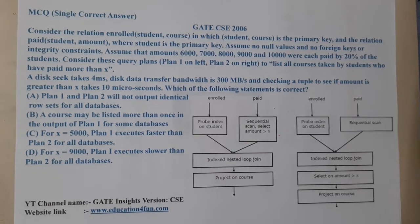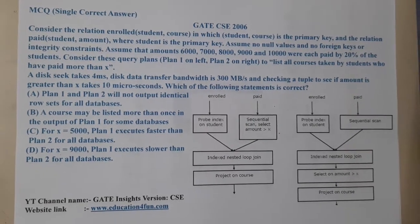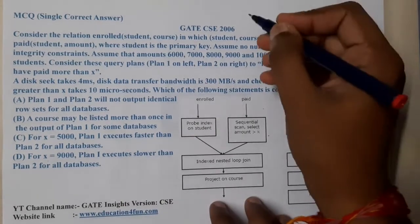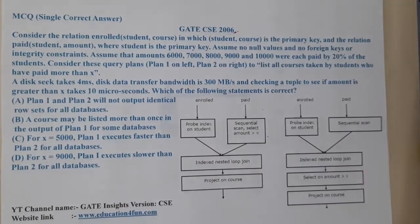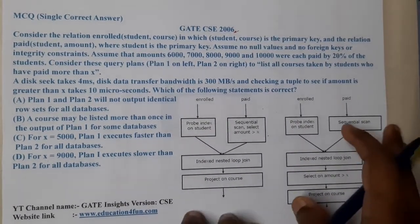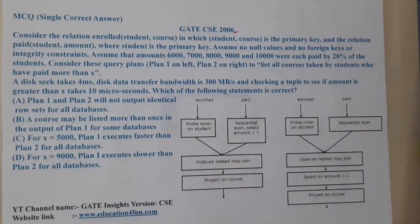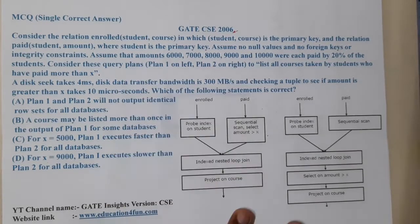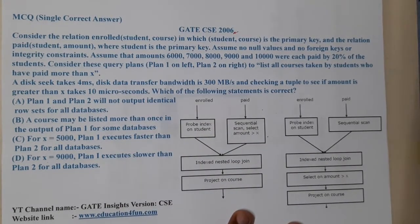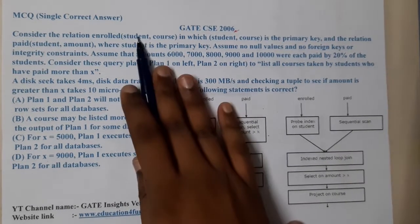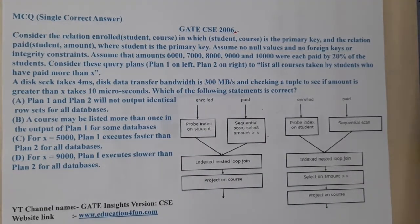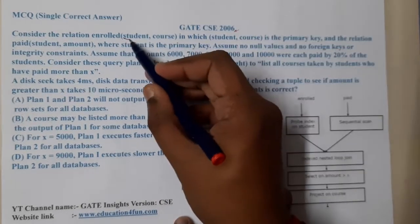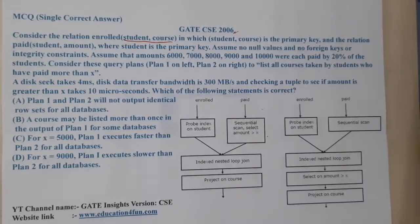Hello guys, we are back with our next lecture. This question belongs to GATE CSC 2006. Consider the relation enrolled(student, course) — there is a table which contains student and course, where student and course combined form the primary key.